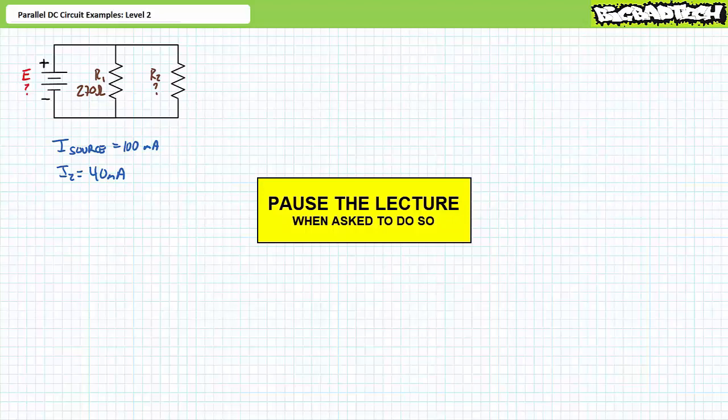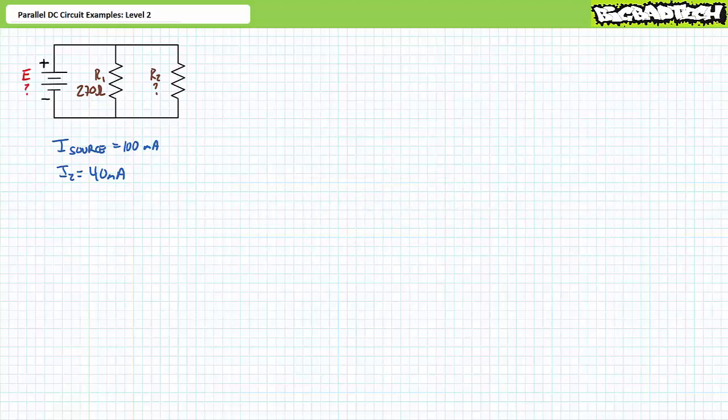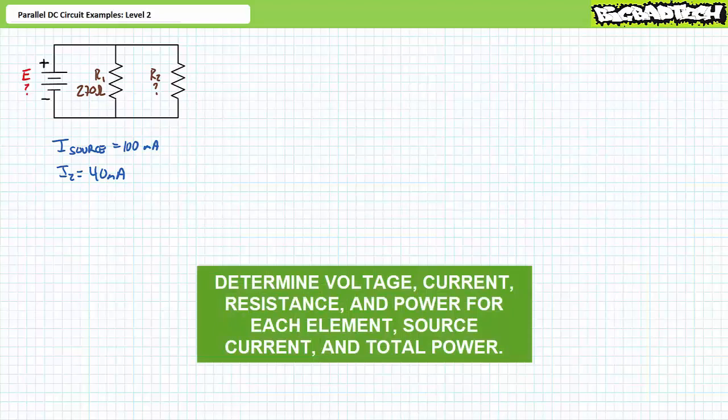Our first illustrated example features an unknown voltage source providing 100 milliamps of source current to a parallel combination of R1, a 270-ohm resistor, and R2, a resistor of unknown magnitude. The only other additional piece of information we're given is that I2 is 40 milliamps. We're being asked to solve for the voltage drop across each element, the current through each element, the power dissipated by each element, the source current, and the total power. By all means, pause the lecture and try this on your own.